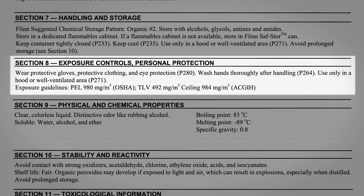Section 8 is about personal protection, specifically the use of personal protective equipment, or PPE. The information here reinforces important safety rules: wear protective gloves, protective clothing, and eye protection to avoid eye and skin contact with chemicals.